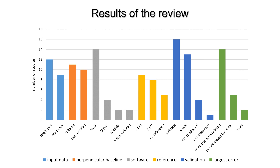While most studies performed statistical accuracy assessments, visual interpretation of the results has also been performed. The most frequent source of error was temporal decorrelation over vegetated areas, but images with small perpendicular baselines also led to bad results.